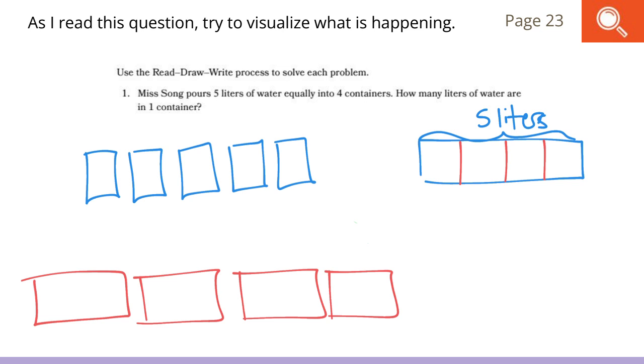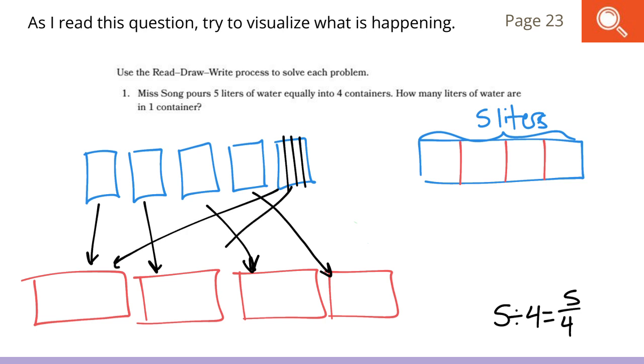Now, if I'm going to solve this, I would need to write my division sentence out, which I have 5 divided by 4. That's going to give me 5 fourths in each. I'm showing this in the model on the left. Each container gets a full liter of water. And then, our last one, we're going to divide into 4 parts. Which means that each container of water would get 1 and 1 fourth. Remember, from our previous lesson, that 5 fourths is equal to 1 and 1 fourth. Either way that I write it, it would still be a correct amount of water in each container.